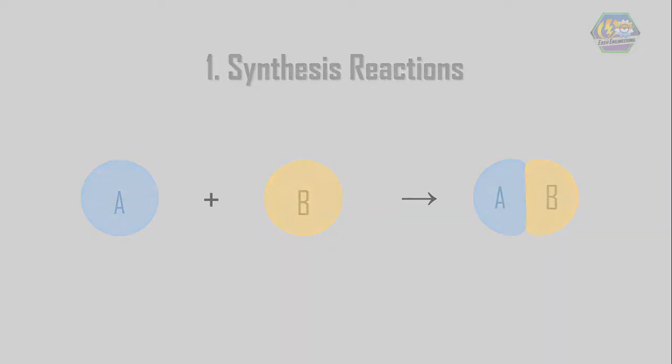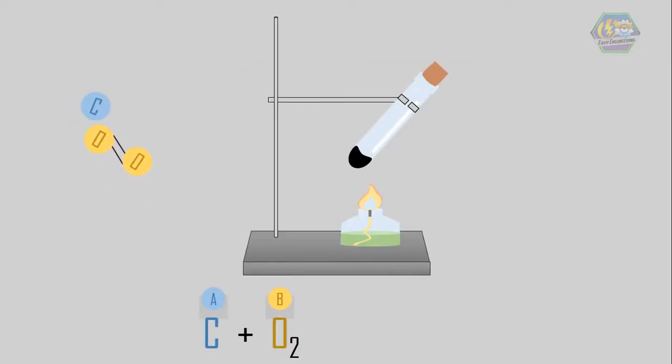For example, formation of carbon dioxide has this formula C plus O2 yield CO2. Here we can see that the carbon combines with oxygen to form carbon dioxide.